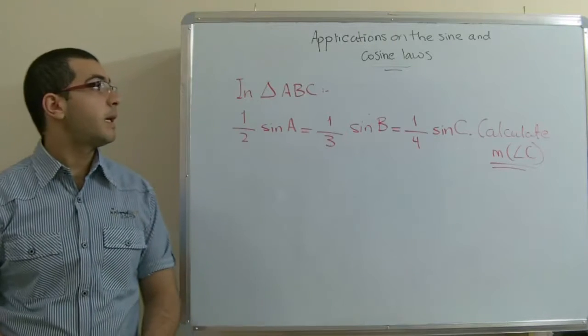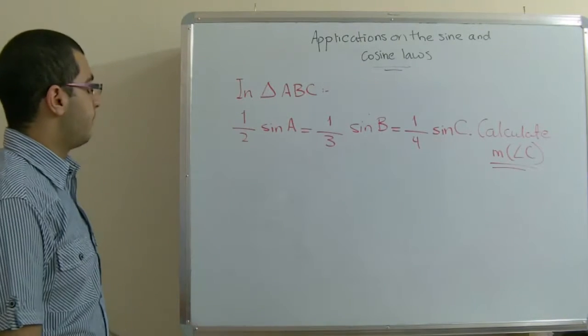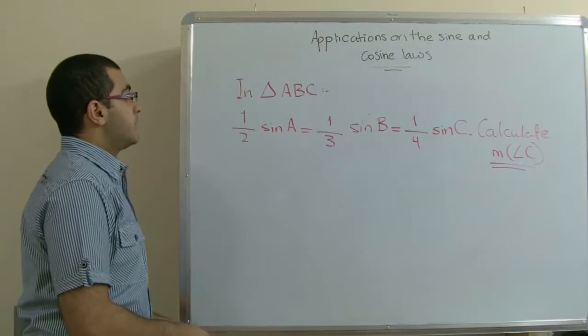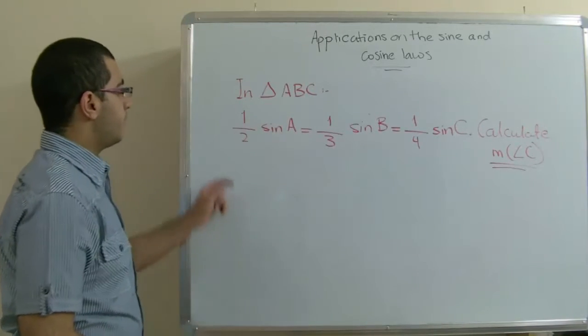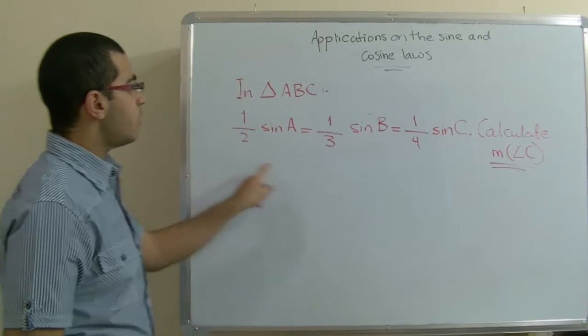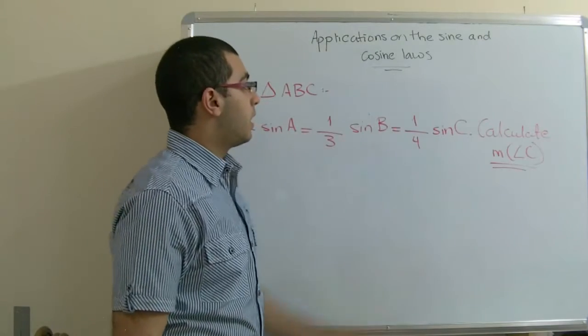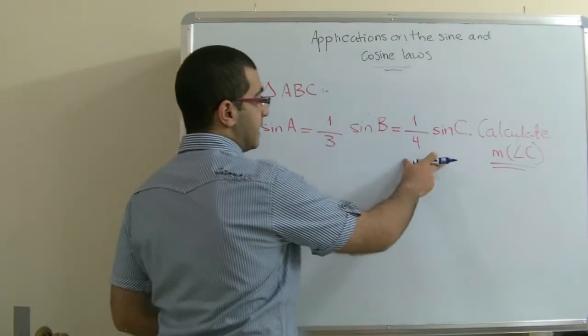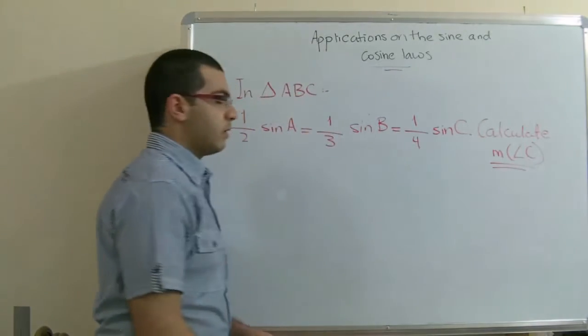Hello everybody and welcome back. This is an application on the sine and cosine laws. We have an example that says if we have a triangle ABC and we have half sine A equal third sine B equal quarter sine C, we want to calculate the measure of angle C.